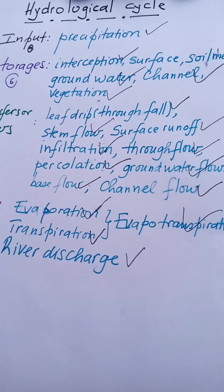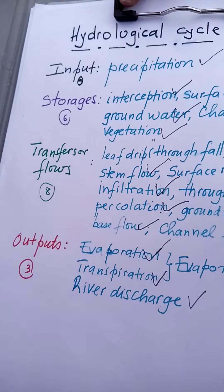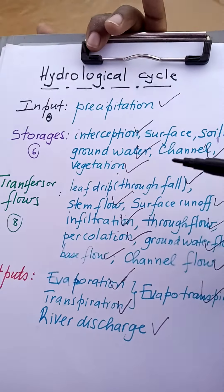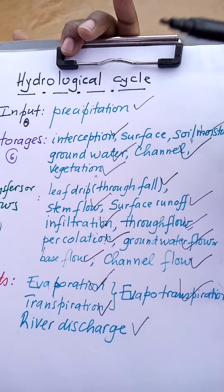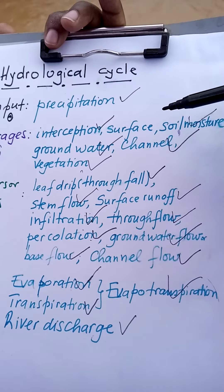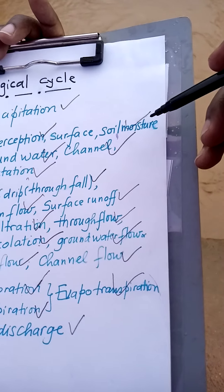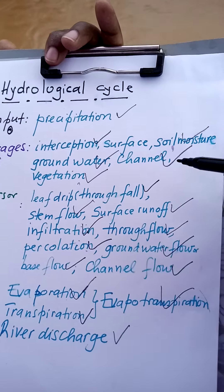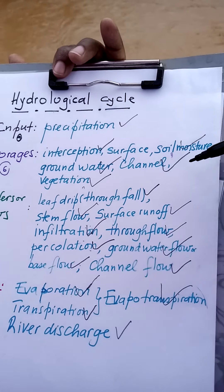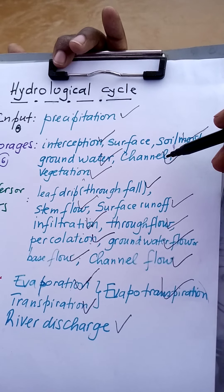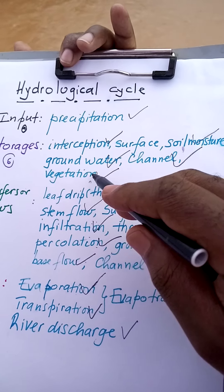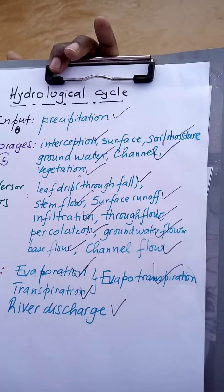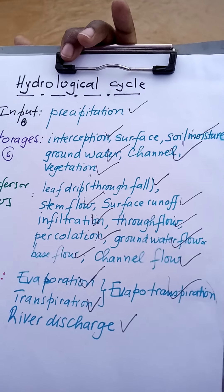A quick recap: the input is only one — precipitation. Storages can be: interception by plants; surface storage where the surface is flat; soil moisture after infiltration; groundwater after percolation; channel storage in a river; and vegetation, as plants have water absorbed by roots.